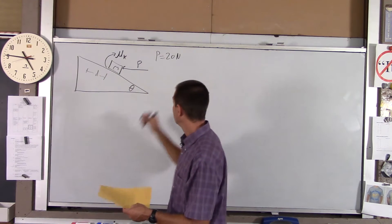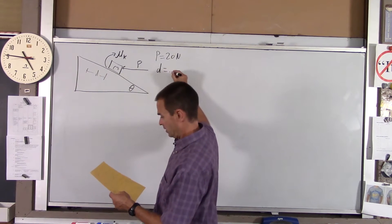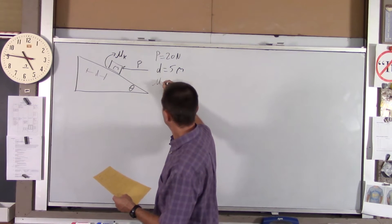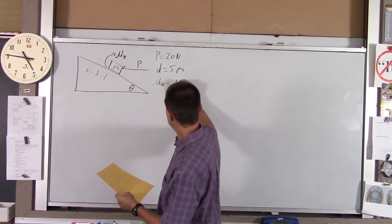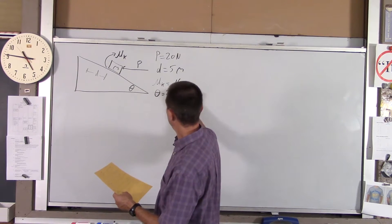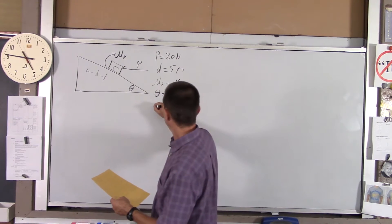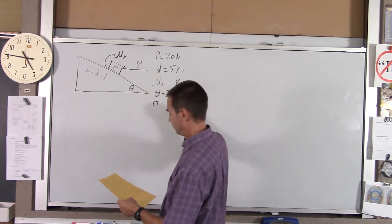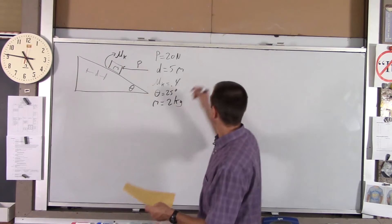The coefficient of sliding friction is 0.4, the angle is 25 degrees with the horizontal, and the mass is two kilograms. We're going to find the following: